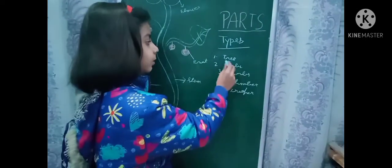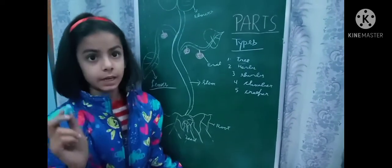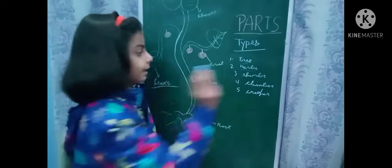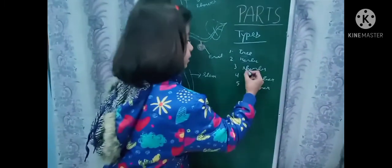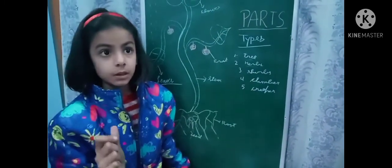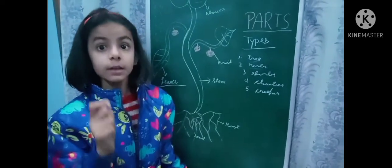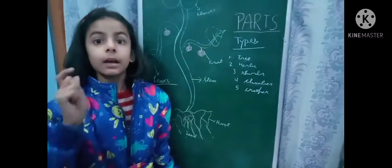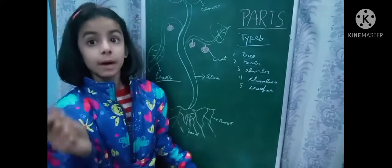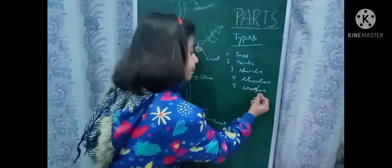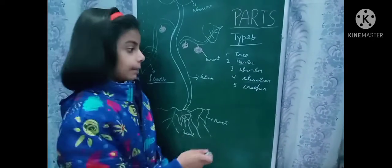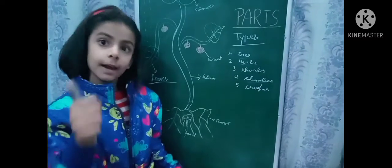Example of tree: Mango, Banyan tree. Example of herbs: Coriander. Example of shrubs: Lily and Rose. Example of climber: Grape and Money plant. Example of creeper: Pumpkin and Watermelon.